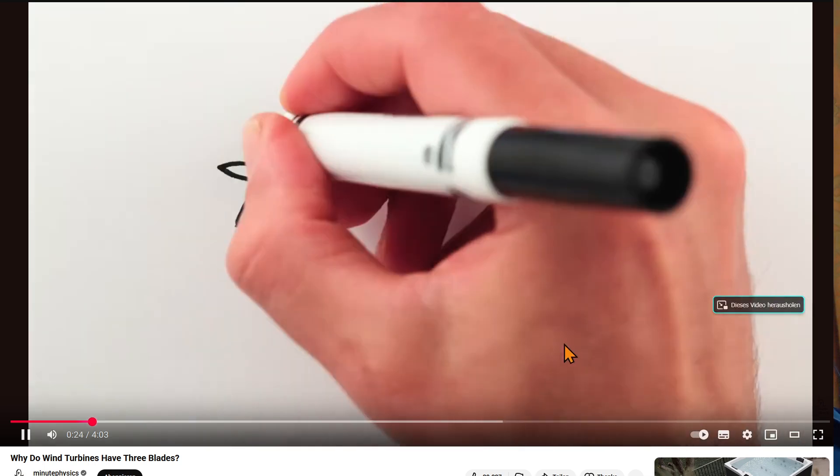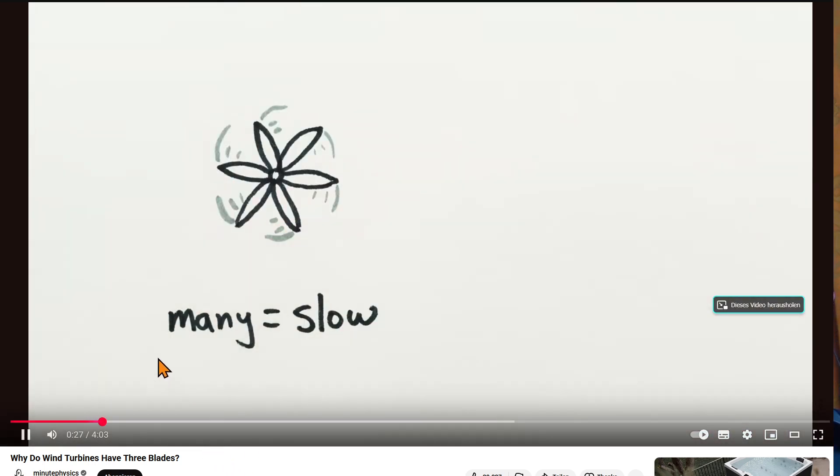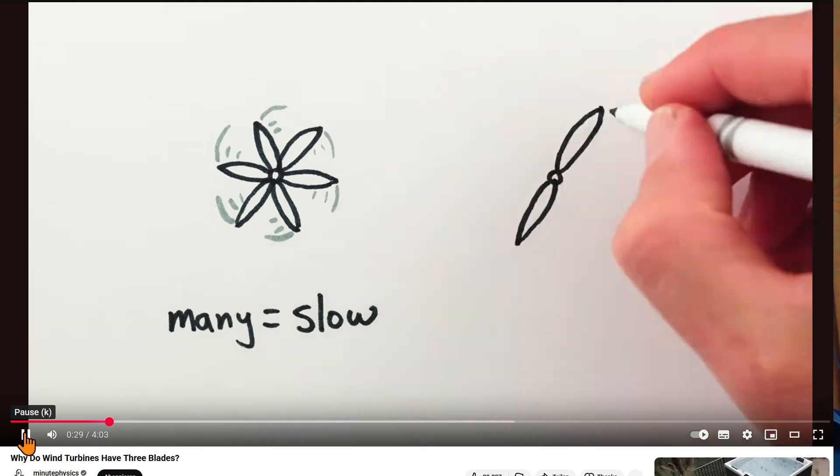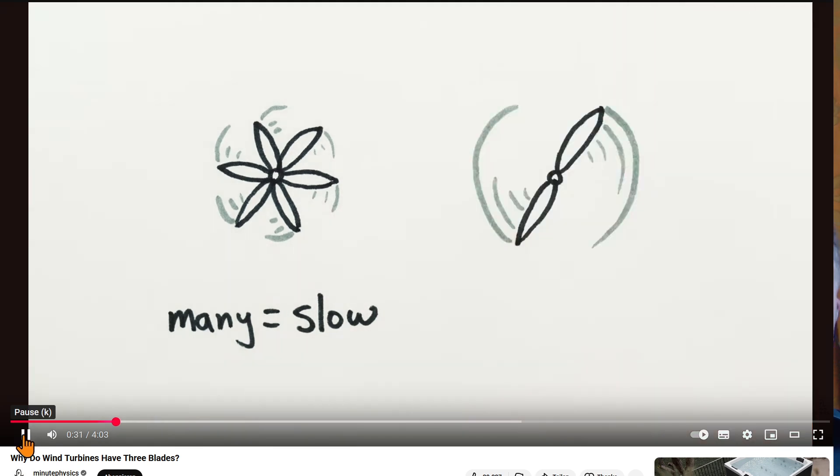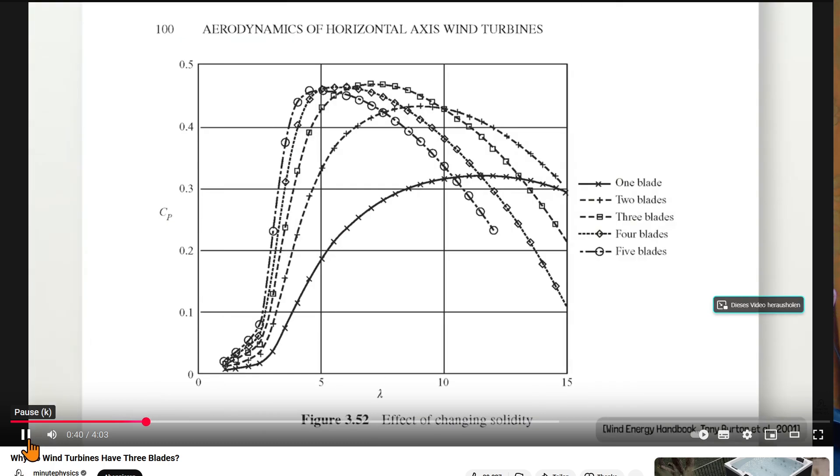So in general many bladed windmills work better at lower rotational speeds relative to wind speed. On the other hand, fewer bladed windmills tend to work better at higher rotational speeds. Here's a graph showing the efficiencies of turbines with different numbers of blades. The efficiency for a five blade turbine is highest at low speeds while a one blade turbine works better at high rotational speeds. You can see that the highest possible efficiency of any turbine comes at intermediate speeds.